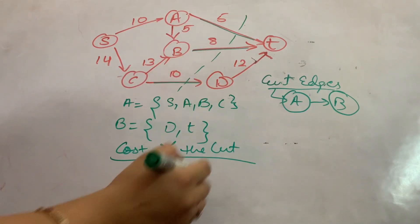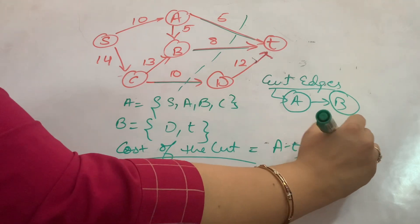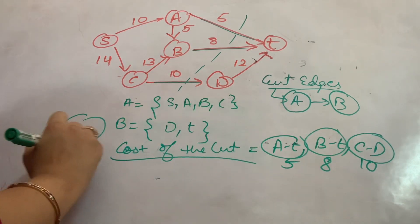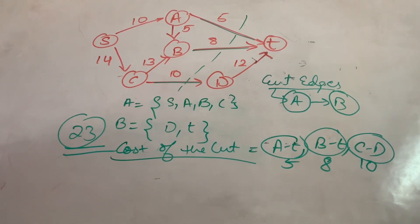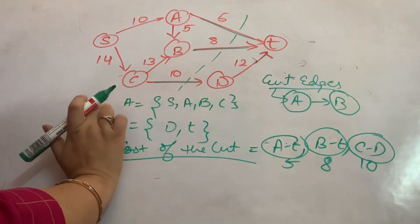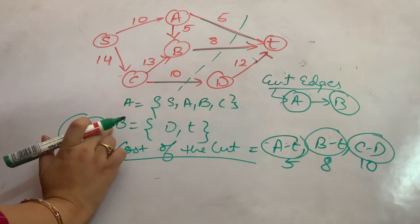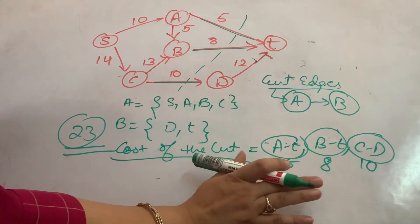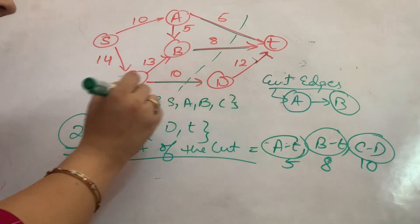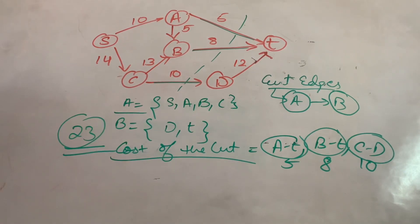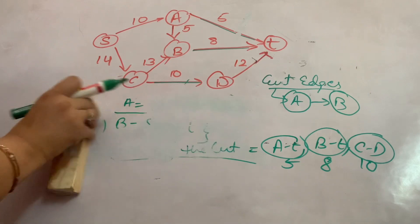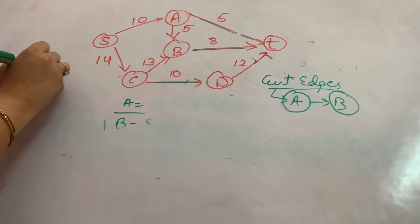The cost of the cut is the sum total of the weights on the cut edges going out from A to B. The weights are: A to T is 5, B to T is 8, and C to D is 10. So 5 plus 8 plus 10 gives us 23. The cost of this current cut comes out to be 23. For a directed graph, make sure you only take edges going out from set A to set B.